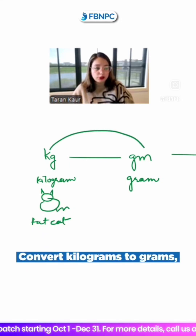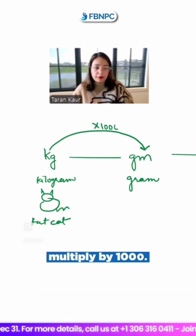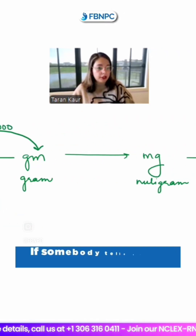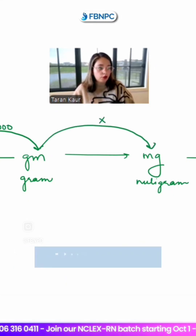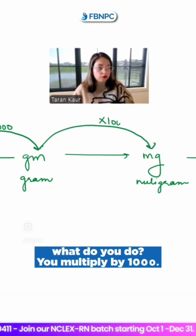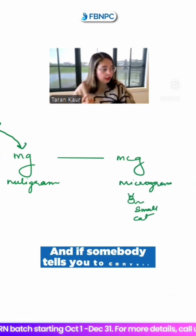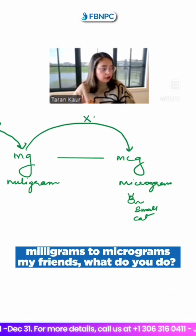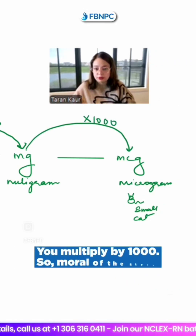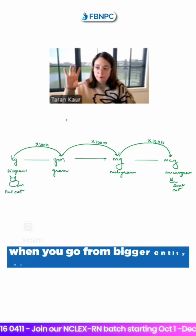So when somebody tells you to convert kilograms to grams, what you have to do is multiply by a thousand. If somebody tells you to convert grams to milligrams, you multiply by a thousand. And if somebody tells you to convert milligrams to micrograms, you multiply by a thousand.